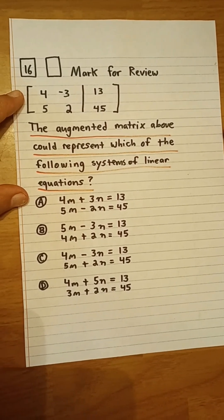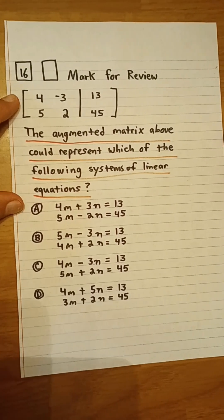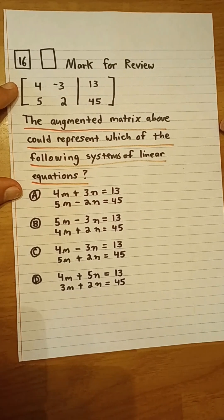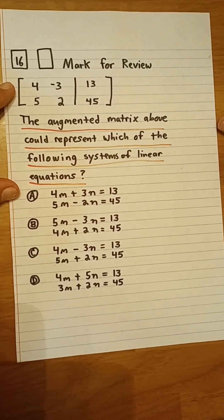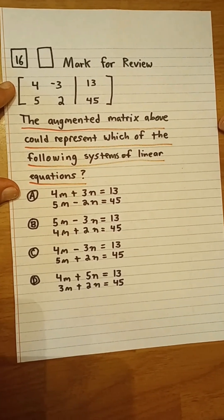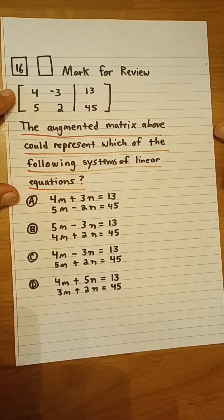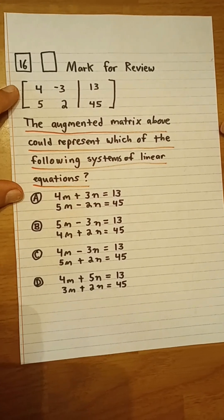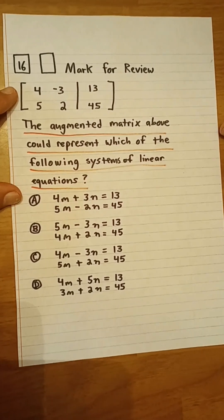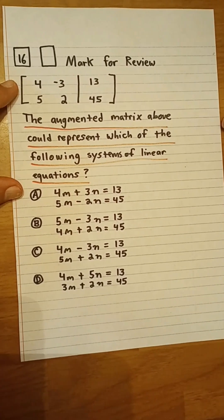All of the answers show the totals of the linear expressions, 13 and 45. The matrix values 13 and 45 must represent the result of the linear expressions. This means that the numbers on the left of the line must represent the coefficients of the variables m and n.